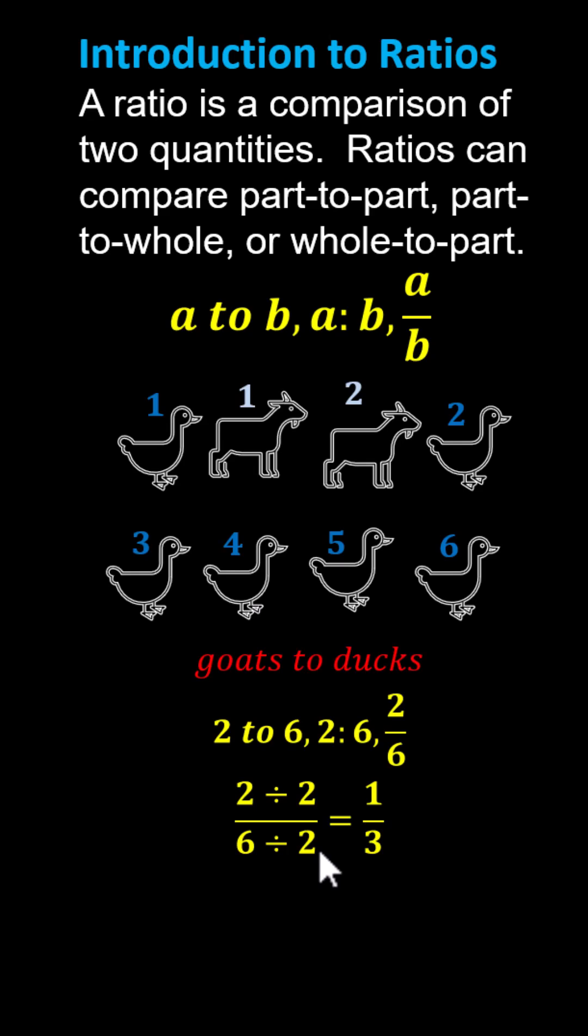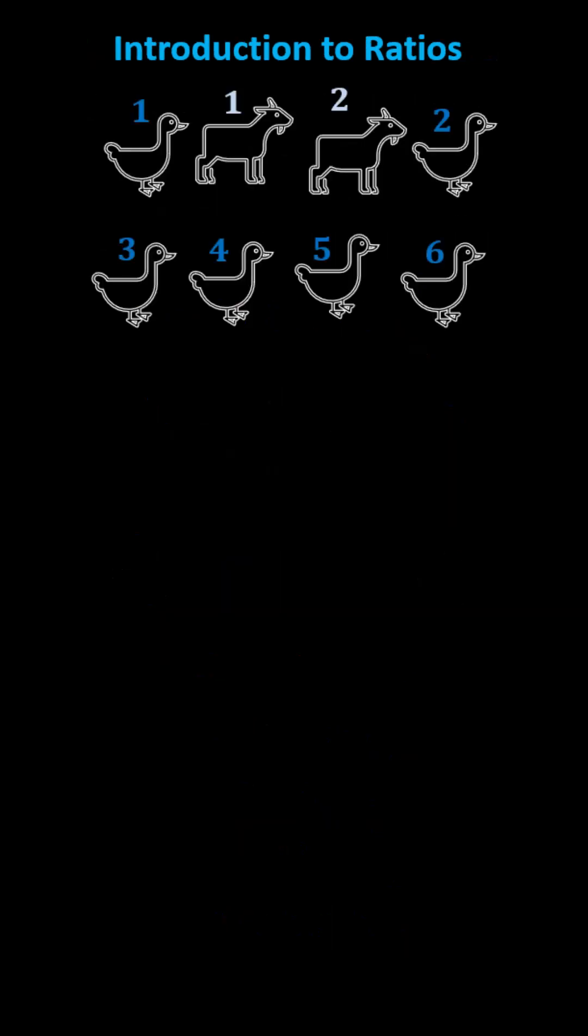Which gives us a simplified ratio of one to three, which again can be written three common ways. Let's take a look at a second example using the same diagram, and now let's find the ratio of ducks to the total number of animals.